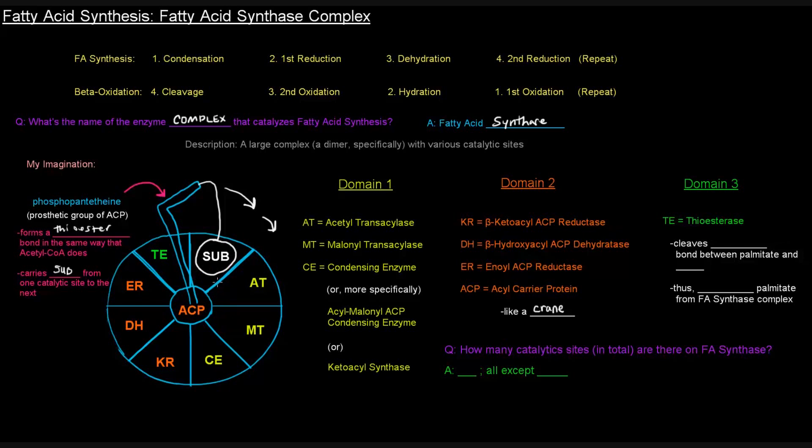Okay, so now let's get to the actual catalytic sites. So there are three domains, cleverly named domain one, two, and three. So domain one I've got here written or sort of depicted in yellow. So these first three sites here, this AT, MT, and CE, stand for acetyltransacylase, malonyltransacylase, and condensing enzyme, respectively. And those are three catalytic sites in domain one.